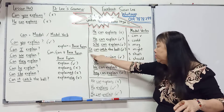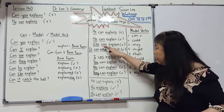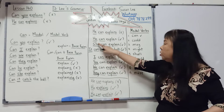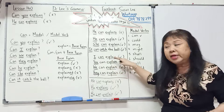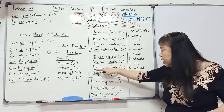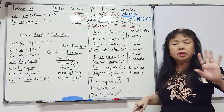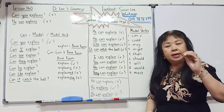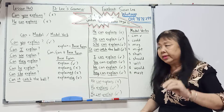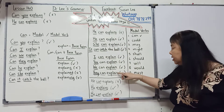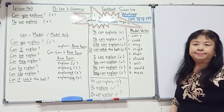Atau she, atau it, atau I, you, we, they — tak kira lah. Asal kita gunakan 'can'. Contoh: she can explain, it can catch the ball, I can explain, you can explain, we can explain, they can explain. Kita tidak kira siapa. Yang penting kalau kita gunakan 'can', selepas perkataan can kita guna kata asal — pasti betul, tidak boleh salah, tidak akan salah.